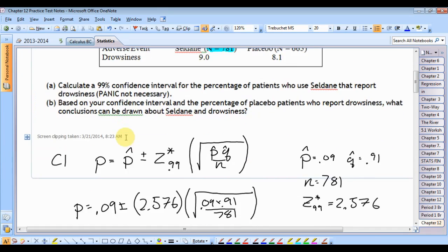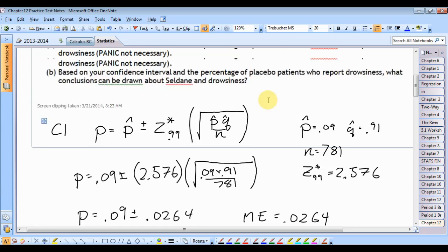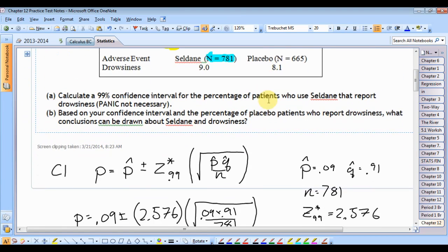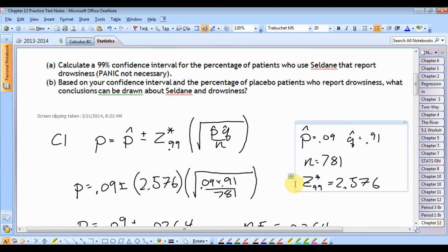Okay, so what do we need to do? We need to make our confidence interval p is equal to p hat plus or minus z star 99 pq over n. Do these formulas look familiar? Yes. Okay, they should. It's chapter 10, right? Okay, p hat is 0.09. Everyone see where p hat came from? Q hat is 91%. N is 781. And how do we get that z star?